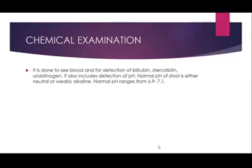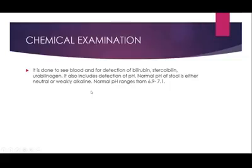The second type is chemical examination. This is done to detect blood and for detection of bilirubin, stercobilin, and urobilinogen. It also includes detection of pH. The normal pH of stools is either neutral or weakly alkaline, ranging between 6.9 to 7.1.